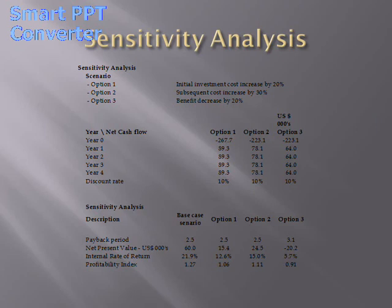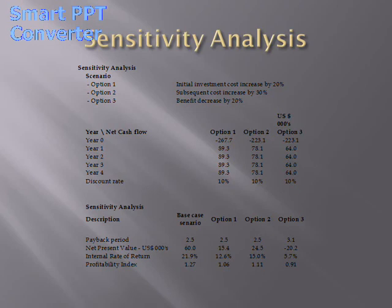As things will not always go as expected, we have conducted a sensitivity analysis identifying three possible scenarios. The first scenario: initial investment costs increase by 20% — the payback period remains 2.5 years but NPV reduces to 15.4, with an IRR of 12.6% and a profitability index of 1.06. The second scenario: subsequent costs increase by 30% due to replacement of damaged units — the payback period remains 2.5 years, NPV is 24.5, IRR is 15%, and the profitability index is 1.11.